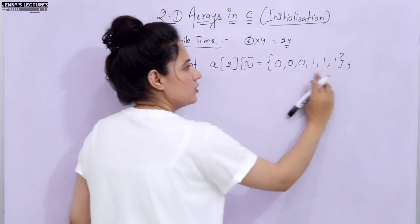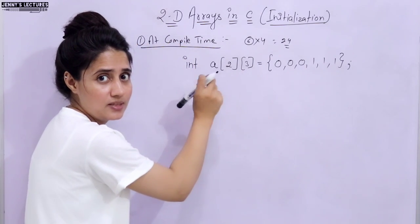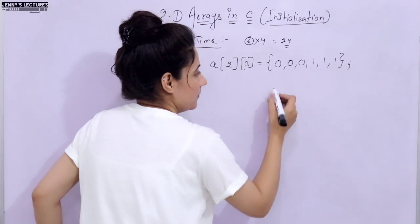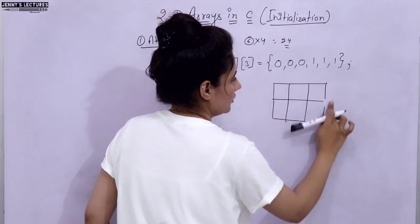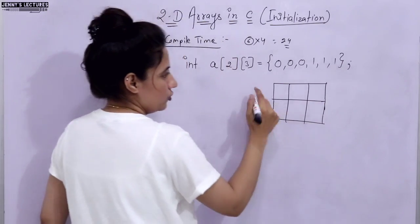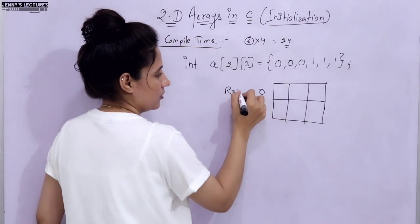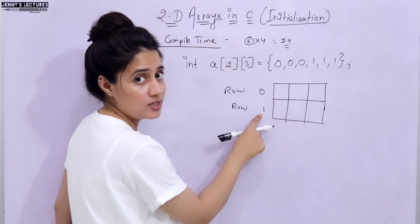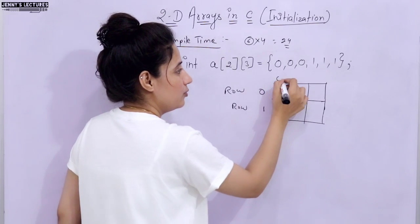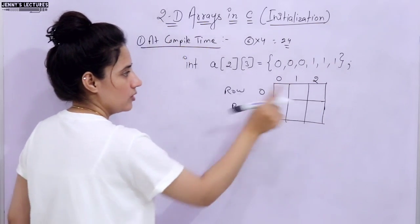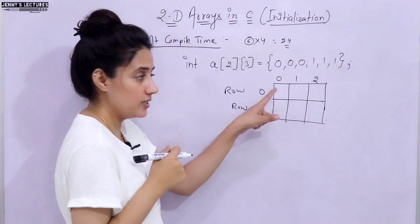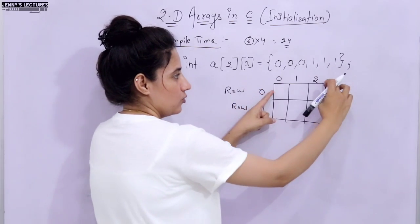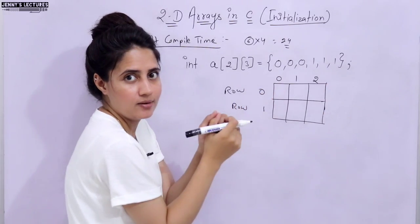Now I have given values — let's visualize how data would be stored in memory. There are 2 rows: row 0 and row 1, since index starts from 0. Columns go from 0 to 2, so 3 columns in every row. A 2D array is essentially an array of 1D arrays — row 0 is one 1D array, and row 1 is another 1D array.